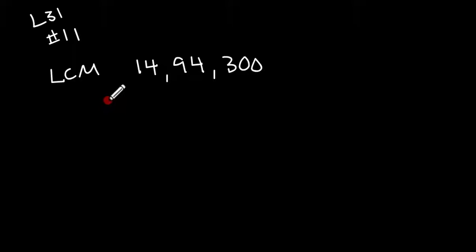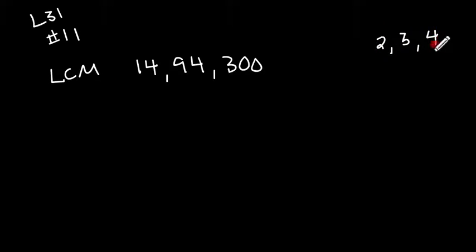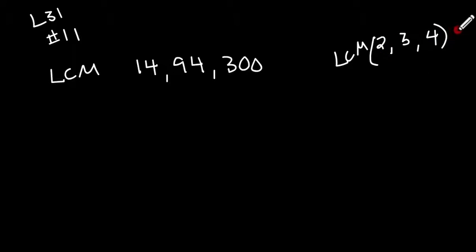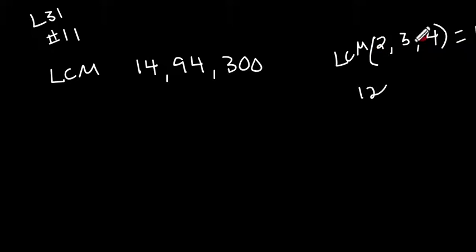The easiest way to do this — if it were numbers like 2, 3, and 4, and we had to find the least common multiple, we can kind of do those in our head. We're like, what number does 2, 3, and 4 all divide into? And we can just think it through and come up with 12. So 2, 3, and 4 all go into 12 — that's the smallest number that they all go into evenly.